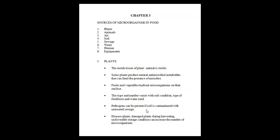Pathogens can be present if soil is contaminated with untreated sewage. If untreated sewage is released into a river and that river water is used for irrigation, maximum pathogens can be added to the soil, which then transfer to crops, fruits, or vegetables. Diseased plants infected with pathogenic microorganisms, or damage during harvesting and unfavorable storage conditions, can increase the number of microorganisms present in raw vegetables, fruits, crops, or grains.